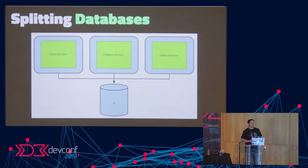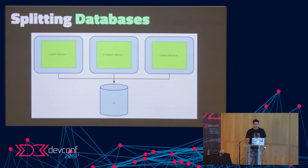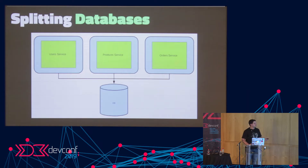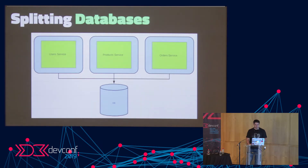Probably the mother of all tangled dependencies when splitting out your monolith is the database. Often people new to microservices will split out the application logic but then end up with a situation where users service, product service, and order service all share one big monolithic database — and this is not great for a number of reasons.